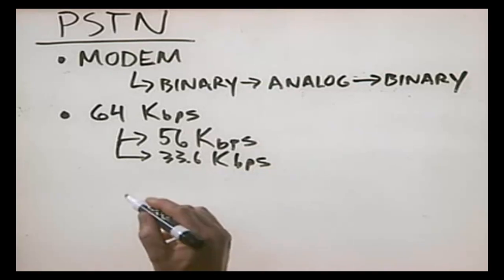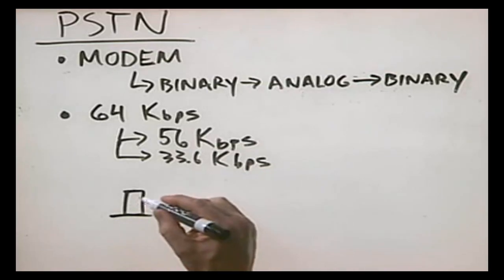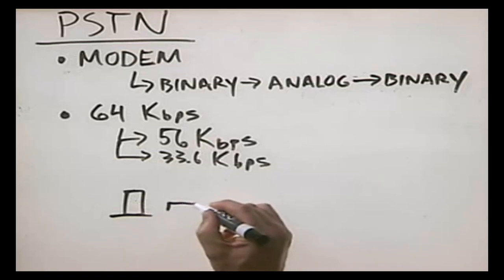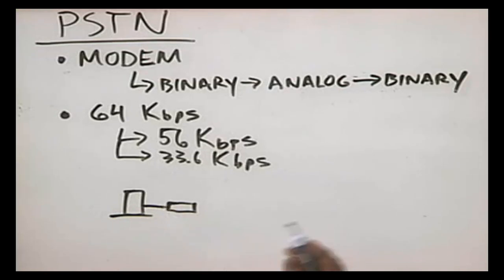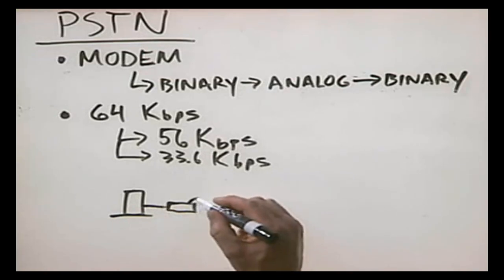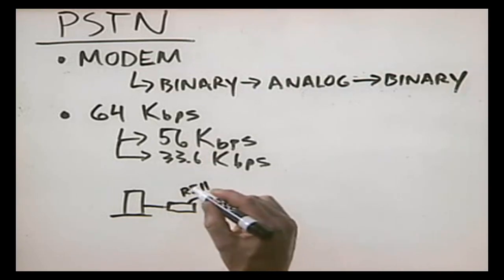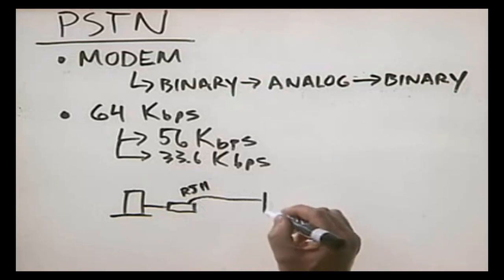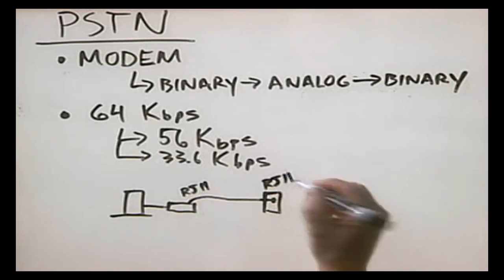So how do you hook it all up? You have your PC and you either have a modem installed inside in an expansion slot, or you have an external modem connected to the PC with a serial cable. On the back of the modem is an RJ11 jack, which is simply a telephone jack that plugs into a wall outlet at your house or small office. In essence, it becomes a telephone device on the public switched telephone network.